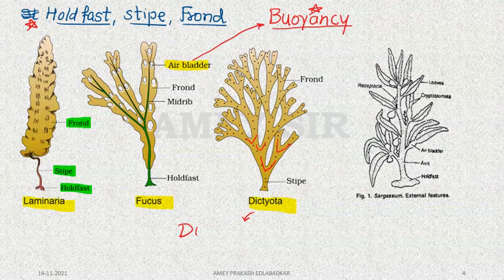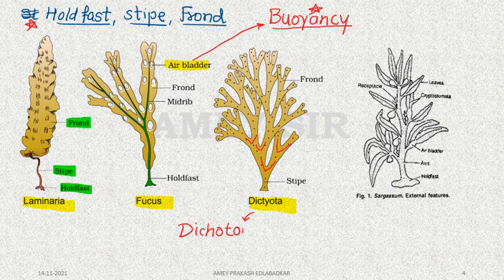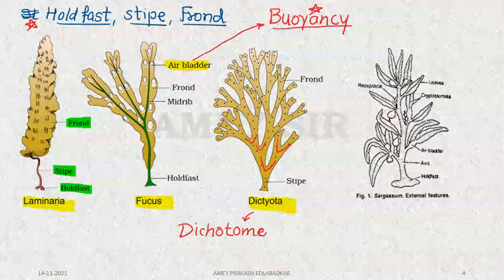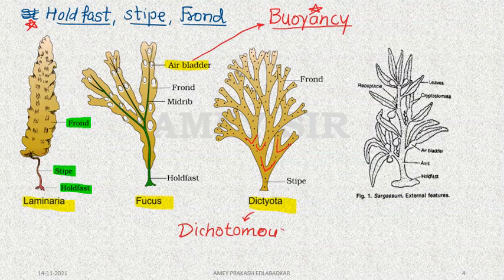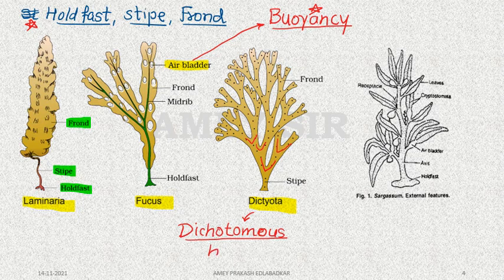In biology, the word 'dicho' is used for two. It is cut into two points, hence 'tome' means cut. From 'tome' comes 'tomus', and the adjective form is '-ous'. Therefore, an important question will be formed on dichotomous branching.